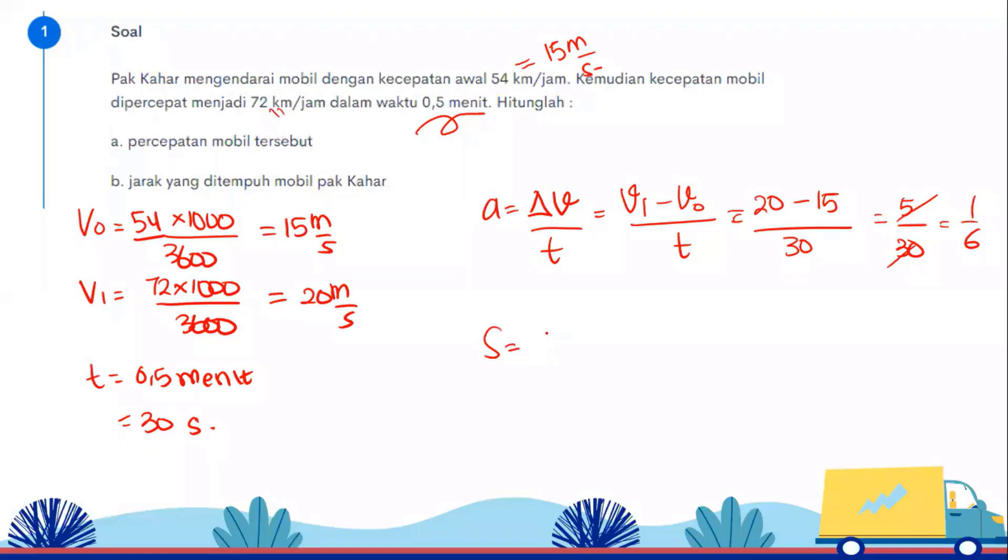Then the next part B: S equals V0T plus half times A times T squared. So 15 times 30 in parentheses first, plus half times A, A is 1/6, times time 30 in parentheses, 30 squared. So 1/2 times 1/6 times 900, which is 450 plus 75, result is 525.